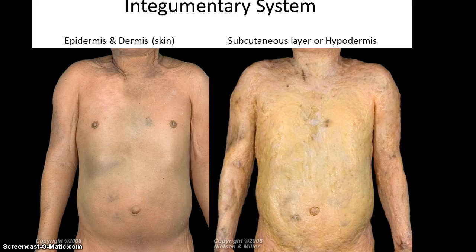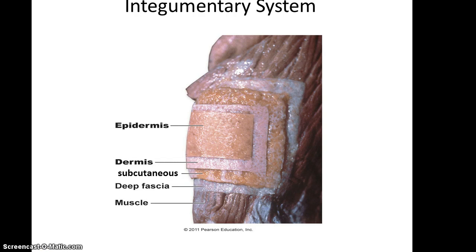The subcutaneous layer is also known as the hypodermis layer. In this image, you can see some of those various layers stacked on top of each other: the epidermis as most superficial, the dermis is next, followed by the subcutaneous layer, and then the deep fascia, which we know to be connective tissue, and below that, muscle.